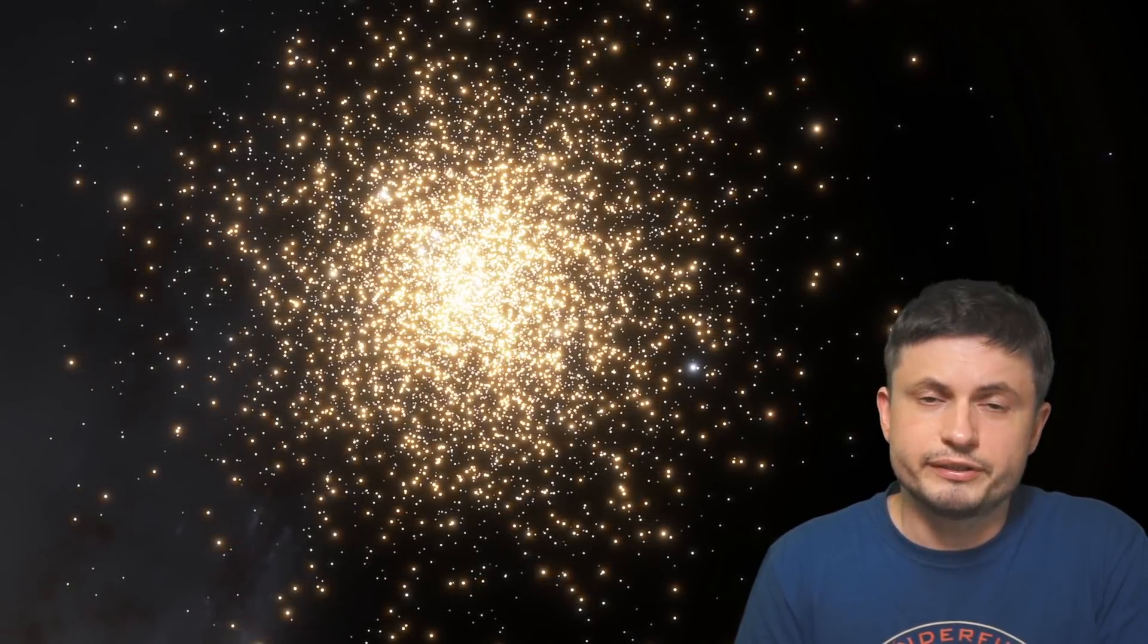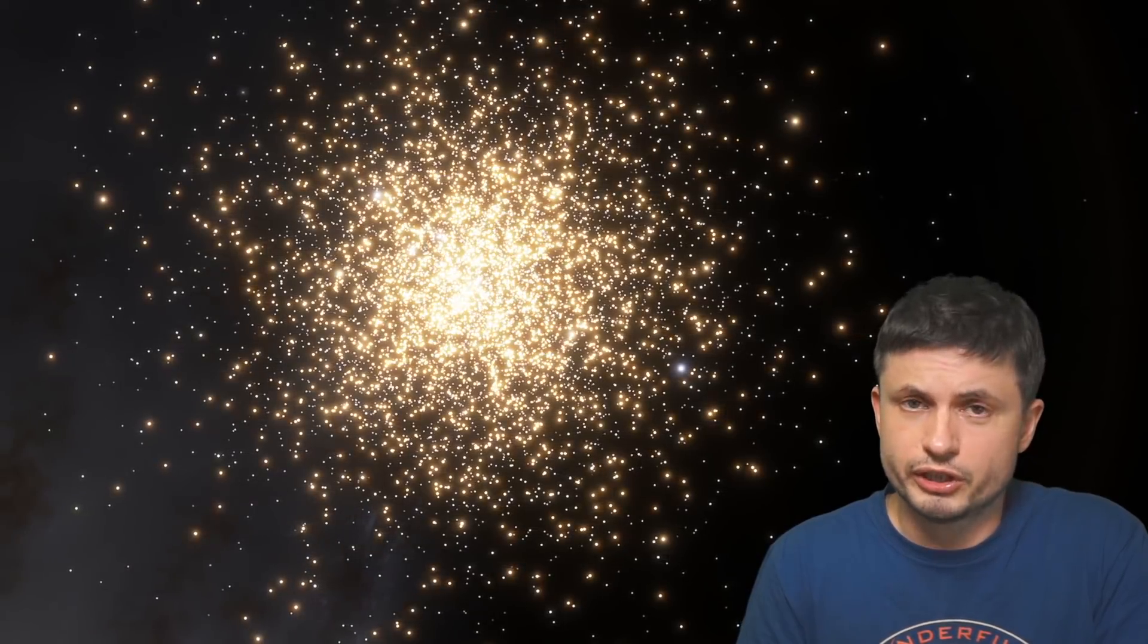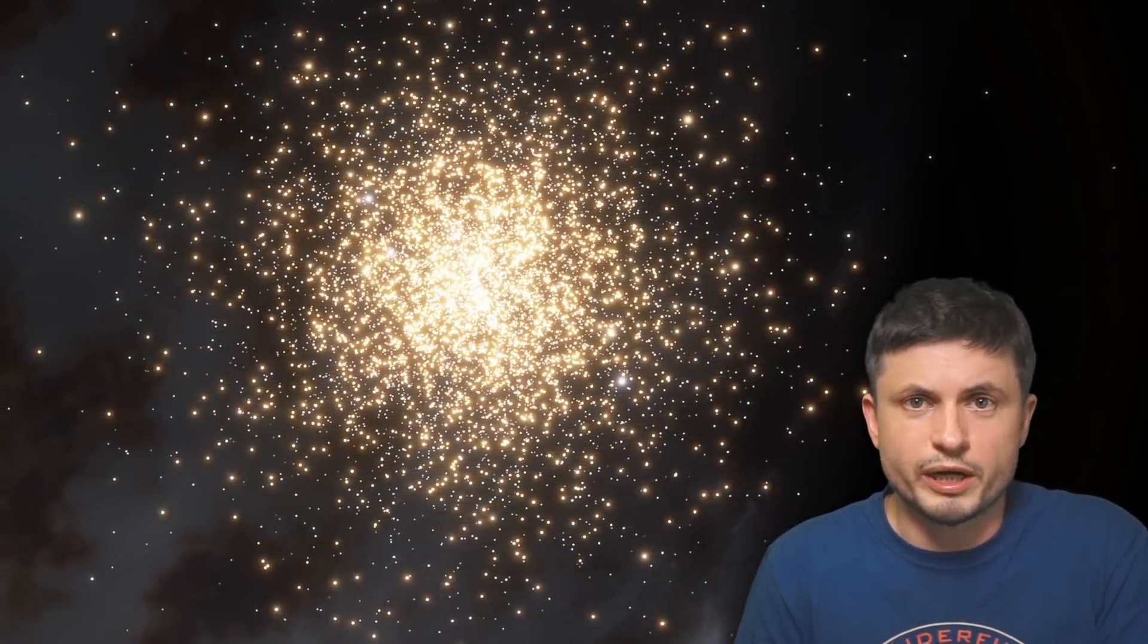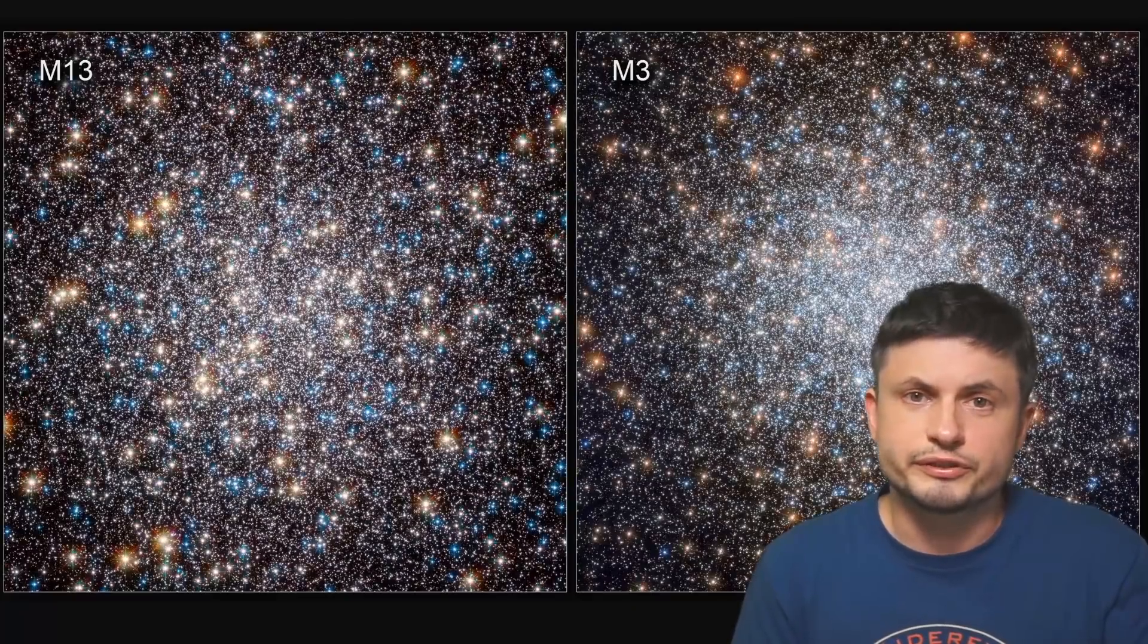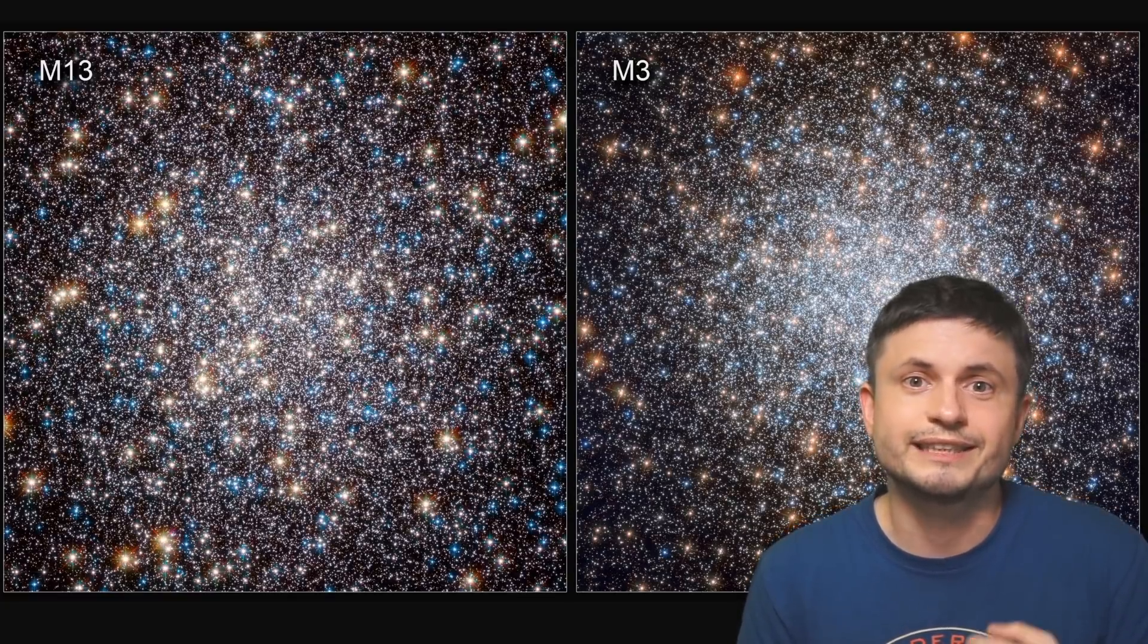Although interestingly enough M13 seems to have slightly bluer, slightly hotter and more massive stars, which also means that it has a chance of producing slightly different white dwarfs as well. At least that's what the scientists thought before they started to investigate this in more detail. Their initial assumption was that it's going to be a little bit different. They did not expect it to be significantly different.